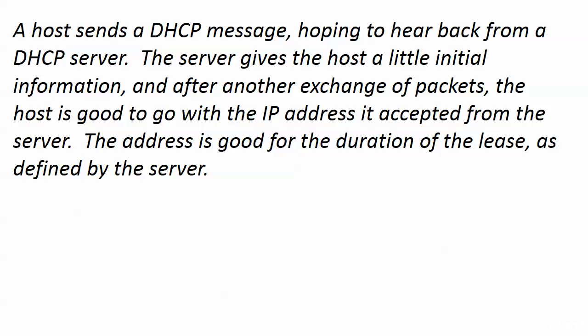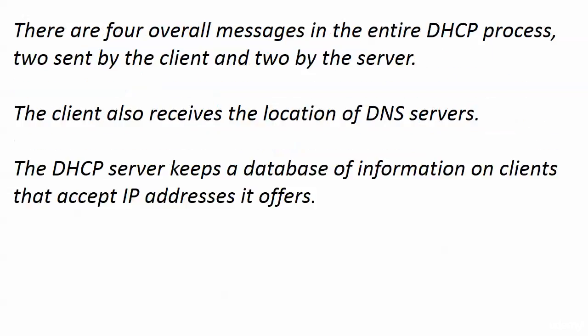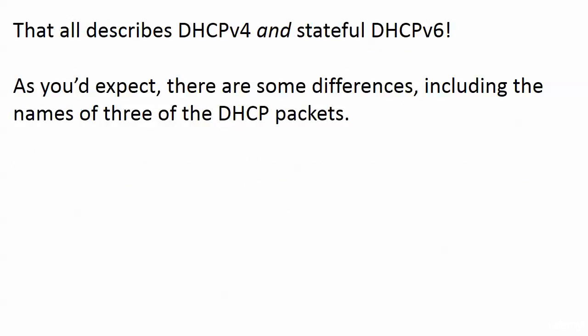That address is good for the duration of the lease, and that lease is defined by the server. There are four overall messages in the entire process — two sent by the client, two by the server. The client also receives the location of DNS servers, and the DHCP server keeps a database of clients that accept the IP addresses it offers. That's how stateful DHCP for IP version 6 works.